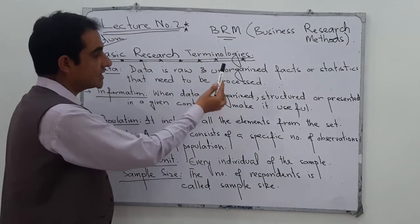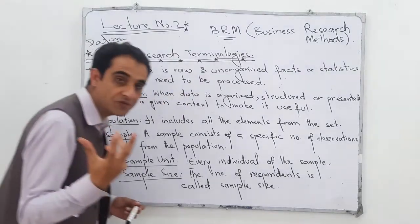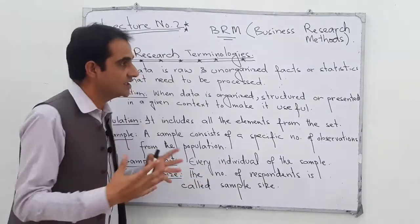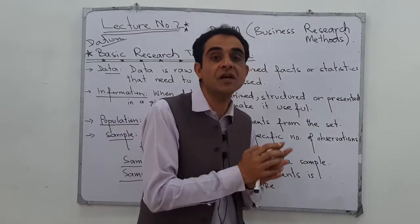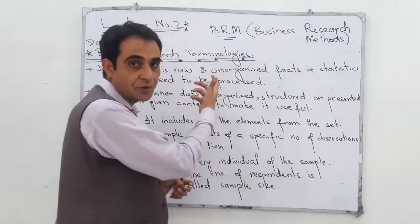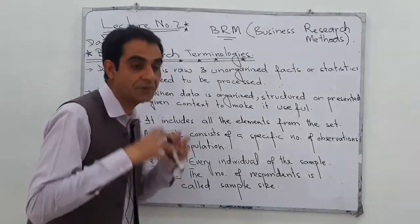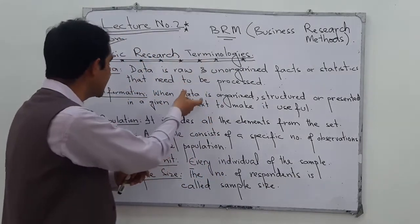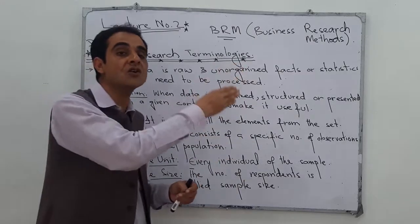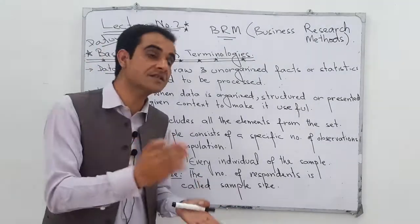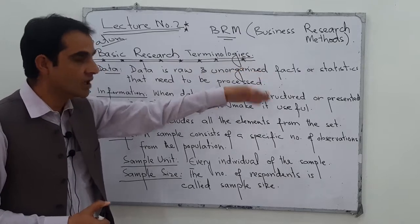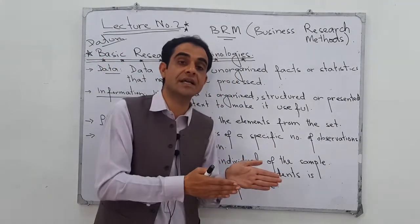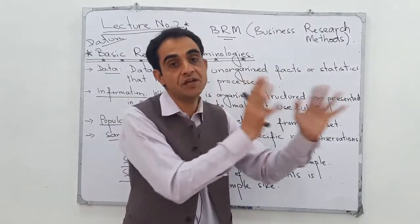Data is raw, unorganized facts or statistics that need to be processed. We have some facts, but those facts are raw, unorganized facts — raw statistics that need to be processed. In research, we collect different types of data by different methods and process that unorganized data to convert it into information. This overall process of converting data to information is called research.